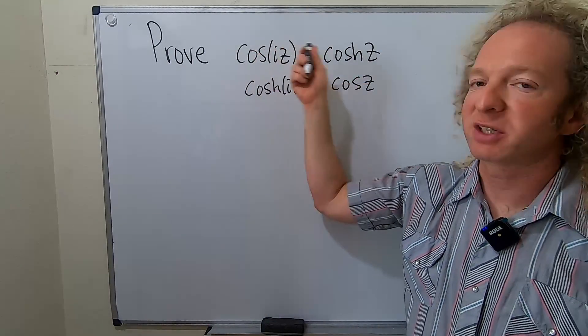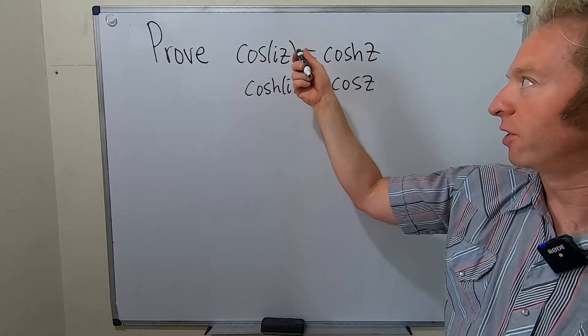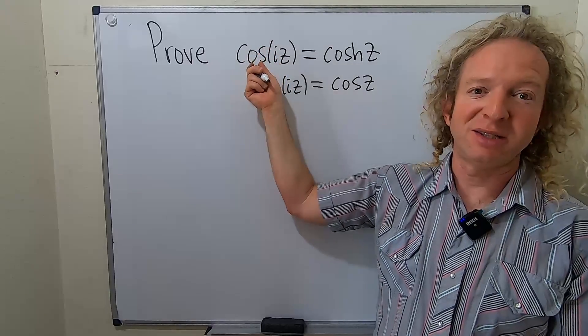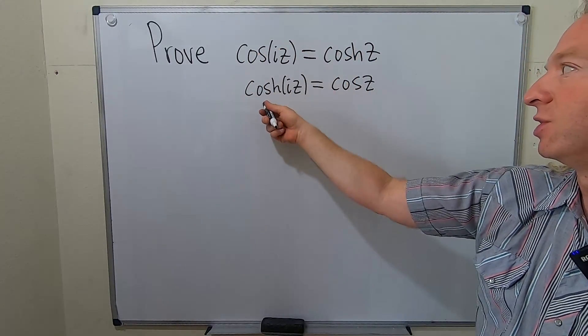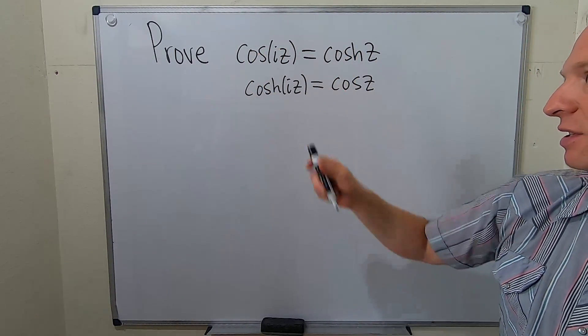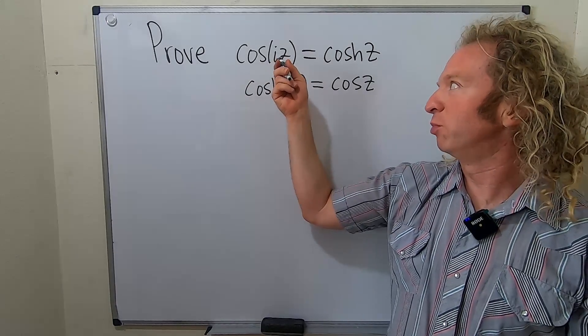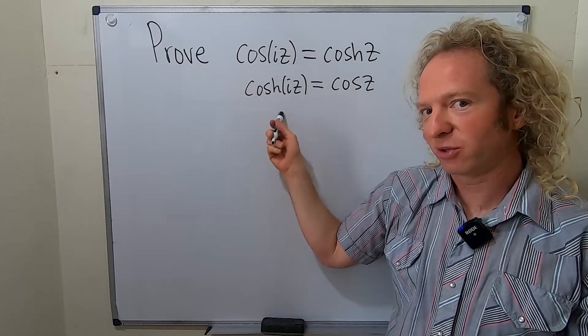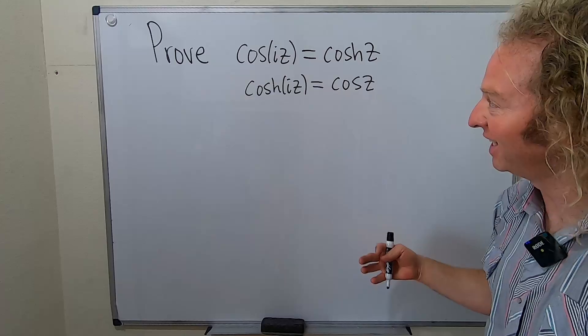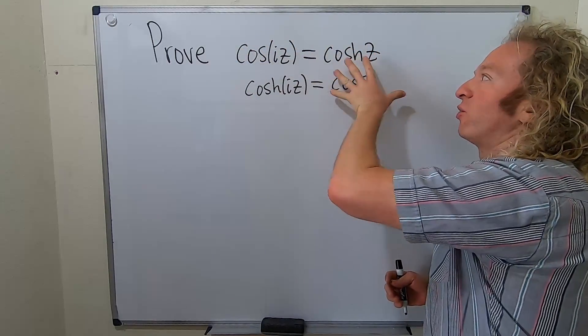So these are complex valued functions. For a complex number, the cosine of iz is equal to cosh and cosh is equal to cos in this sense. Basically, when you plug in iz into either cosine or cosh, the i goes away. It's an i-killer. It just goes away and you get the other one.